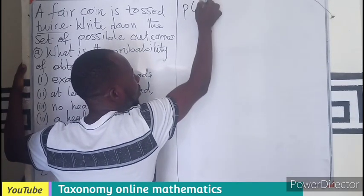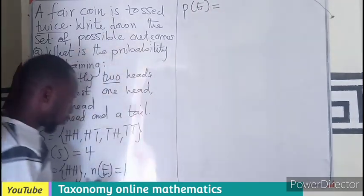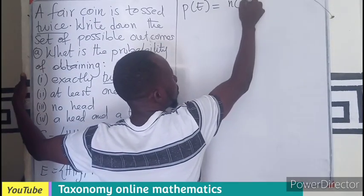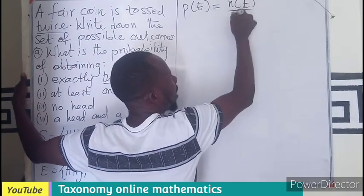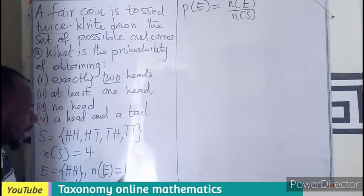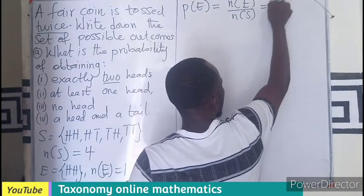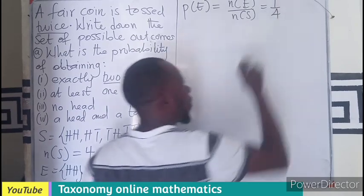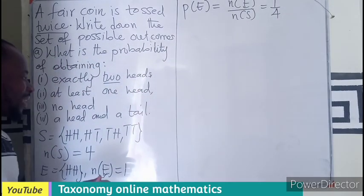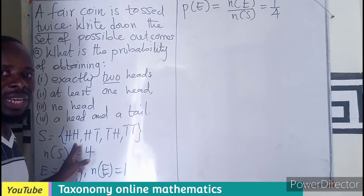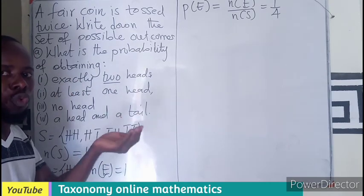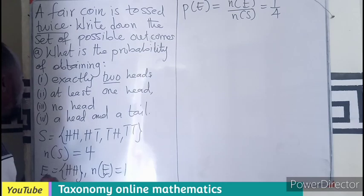The probability of E equals the number of elements in E over the number of elements in the sample space, which gives us 1 out of 4. So the probability of getting two heads when a coin is tossed twice is one quarter.